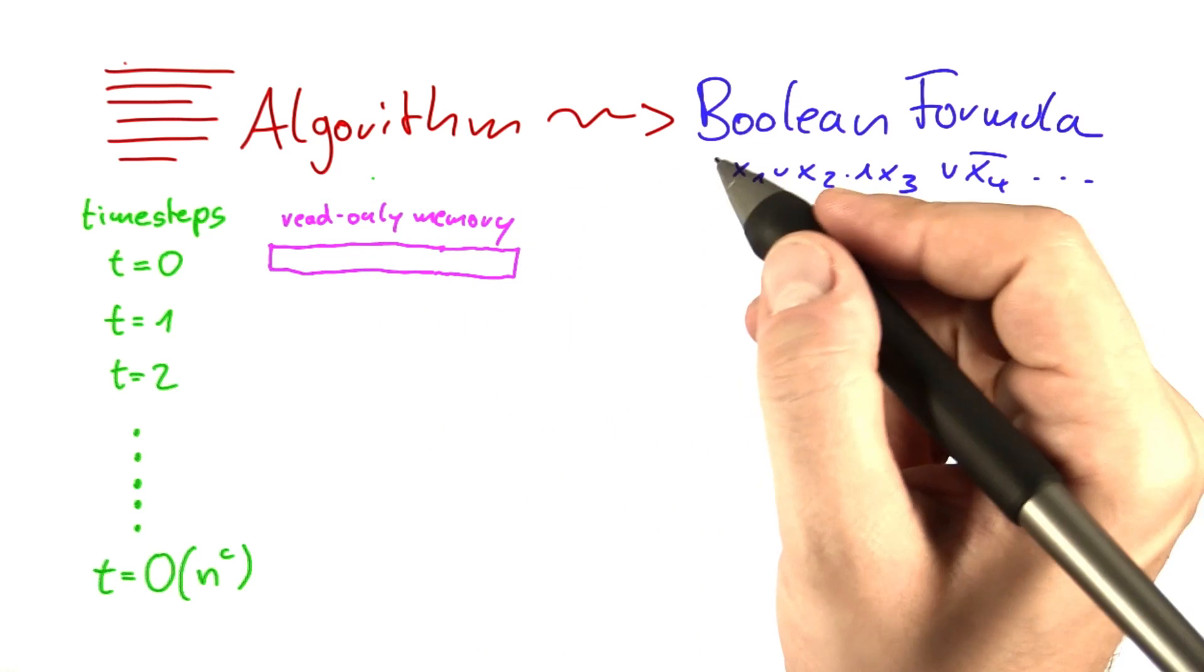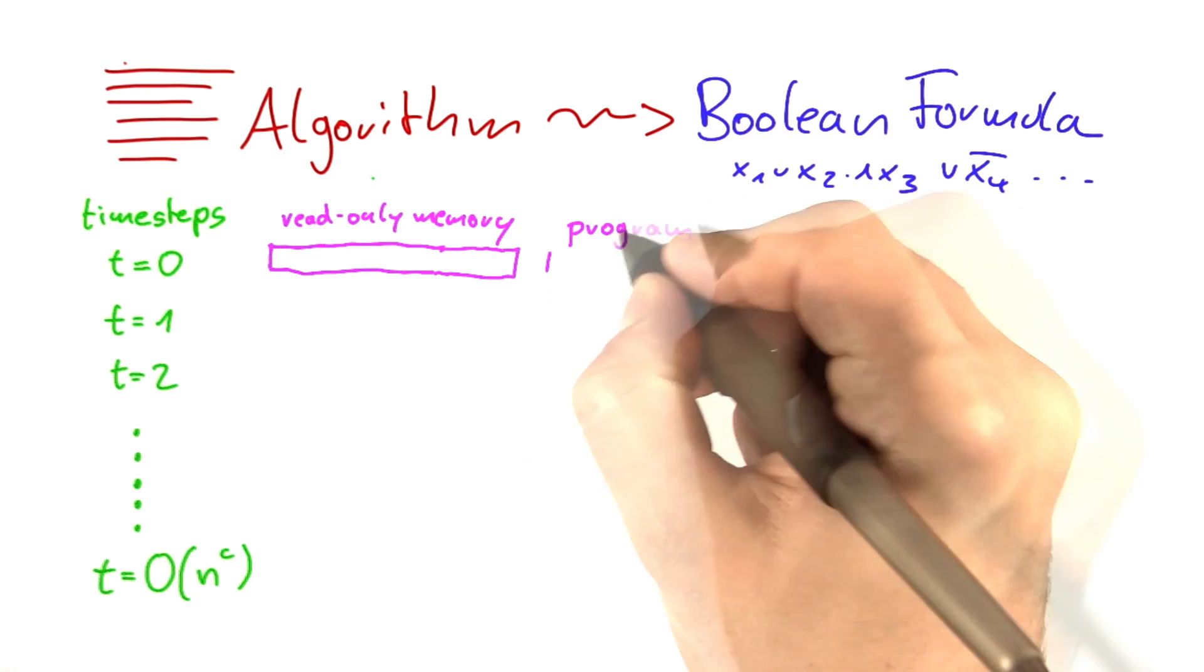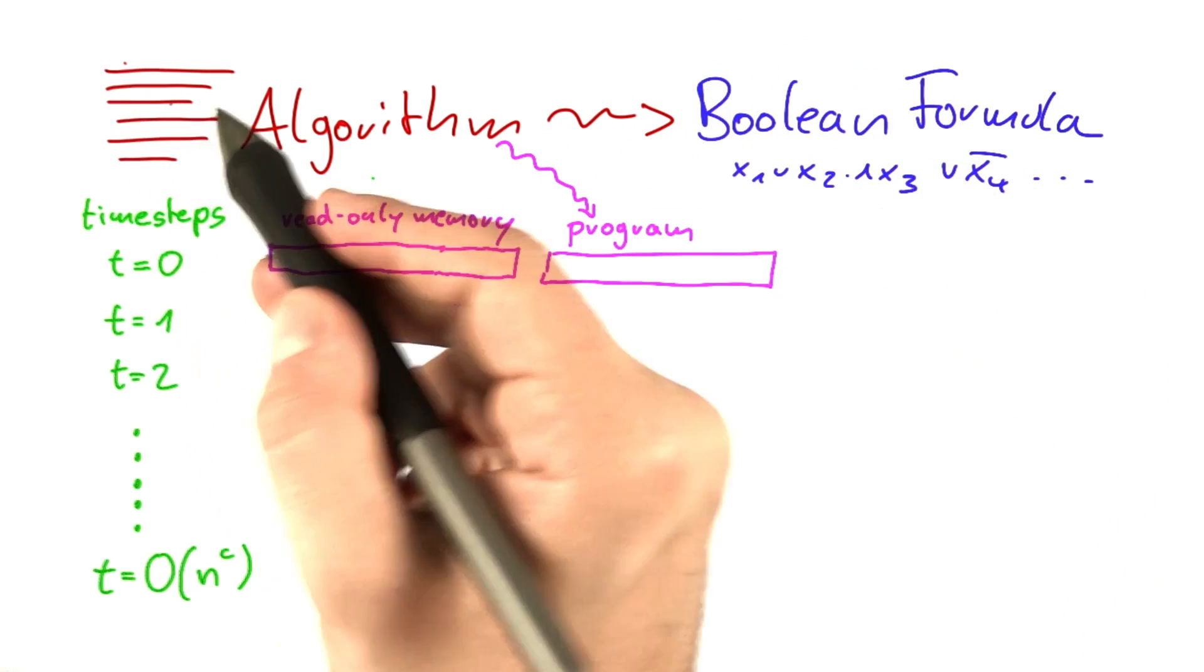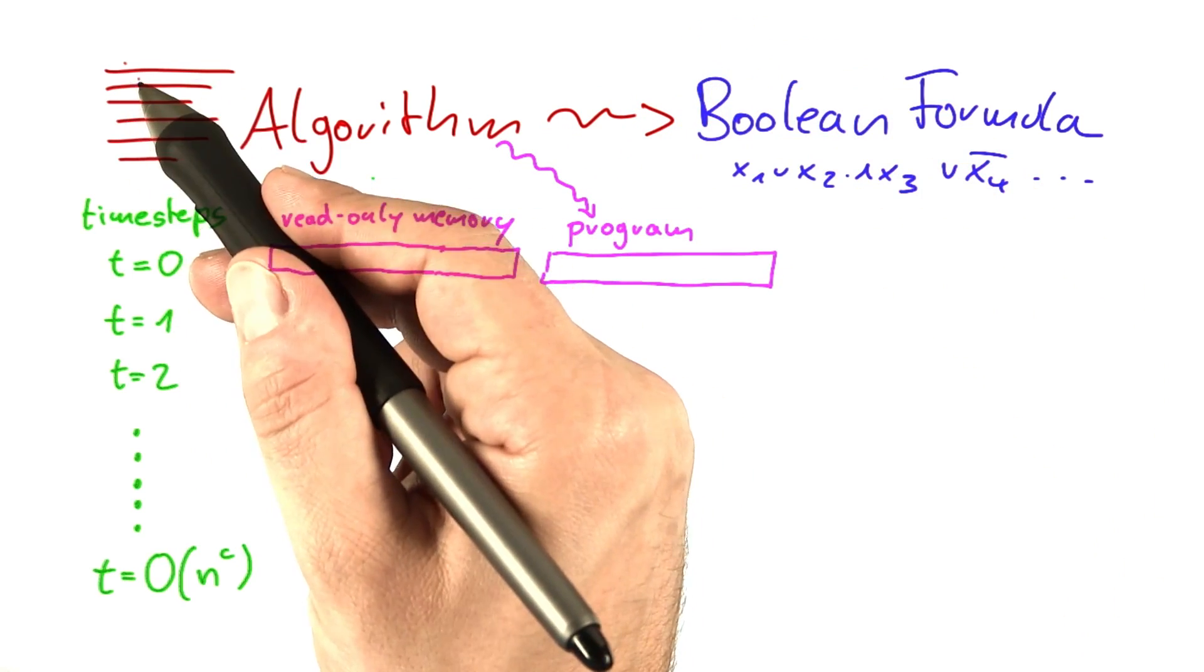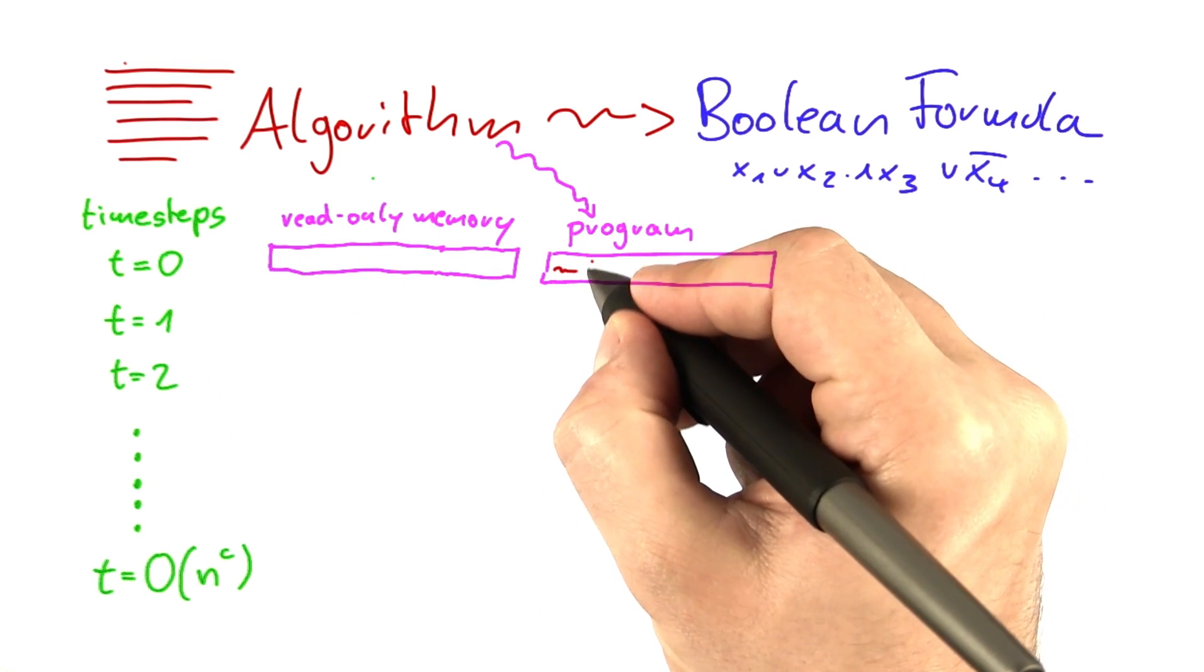The RAM has a read-only memory. The RAM has a program or the algorithm running. So this algorithm here is basically the program running. And just as I would write the algorithm line by line by line, I can also write it in this way.